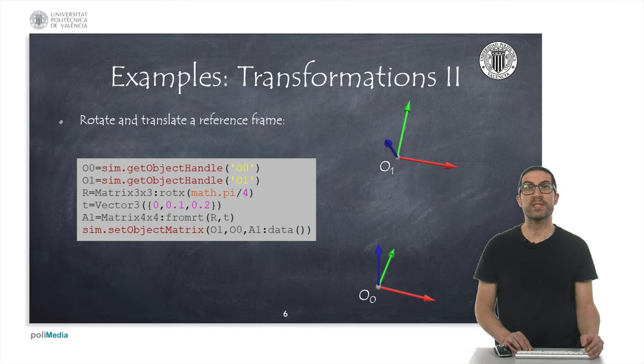Here, I show another example in which I create a transformation matrix from a rotation matrix and a translation vector using the fromRT function. So, to set the pose of a reference frame with respect to another, we can access the elements of the matrix A1 by using the data method. As you can see, we have used these ideas to set the reference frame O1 with respect to O0 in the given code.